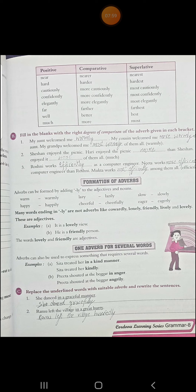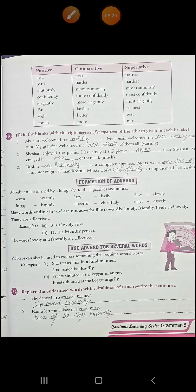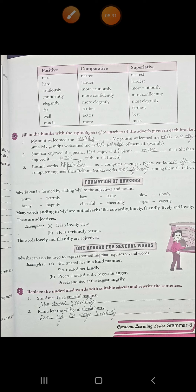Next is formation of adverbs. Adverbs can be formed by adding -ly to adjectives and nouns. Like: warm → warmly, happy → happily, lazy → lazily, cheerful → cheerfully, slow → slowly, eager → eagerly. Note: many words ending in -ly are not adverbs — like cowardly, lonely, friendly, lively, and lovely. These are adjectives. For example: 'It is a lovely view.' 'He is a friendly person.' These are not adverbs.